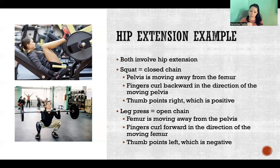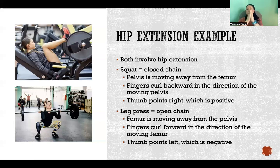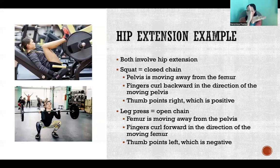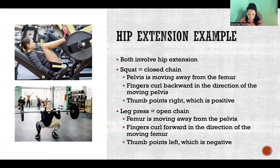So it's the same movement — hip extension — but we have opposite segments moving. Hip extension just means the pelvis and femur are moving away from each other, but in one example the pelvis moves away from the femur, and in the other the femur moves away from the pelvis. So we flip our hand around because we're following the direction of the moving segment, not the stationary segment.